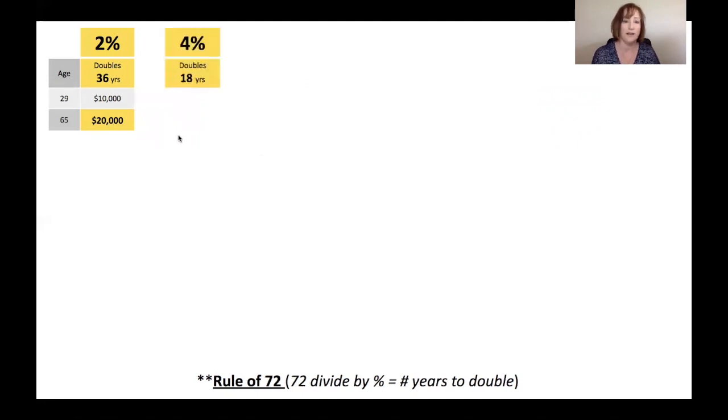At 4%, the money doubles every 18 years. Always going to take the same scenario of a 29-year-old, but they've done a little bit more homework. They're making an extra 2% on their money. So now their money is going to double every 18 years. So 29 plus 18, by age 47, they've got $20,000. They get one more doubling. By age 65, 20 doubled is $40,000.